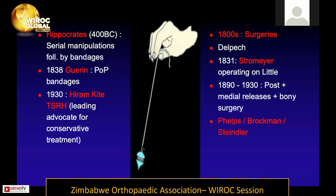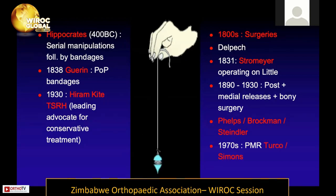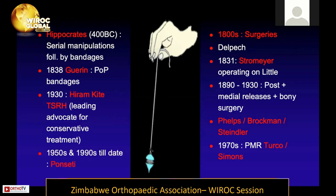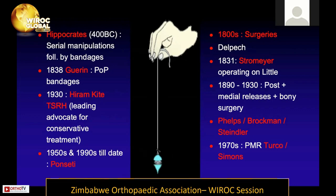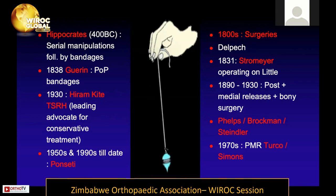Around the 1930s, conservative treatment became the norm again, and Hiram Kite from the Texas Scottish Rite Hospital became one of its leading advocates. Towards the 1970s, the pendulum swung back towards posterior medial release described by Turco and Simons. Around the 1950s, the Ponseti method emerged, and has seen a resurgence of interest over the last 20 to 30 years. Though we consider conservative treatment new, it has been with us for centuries.